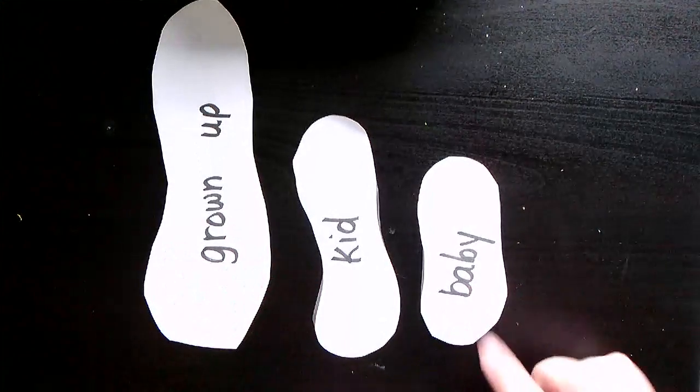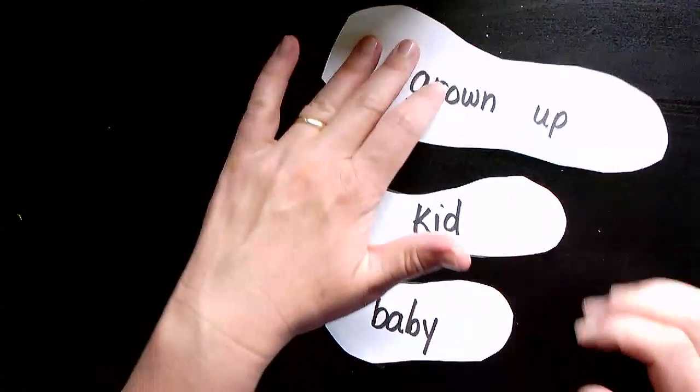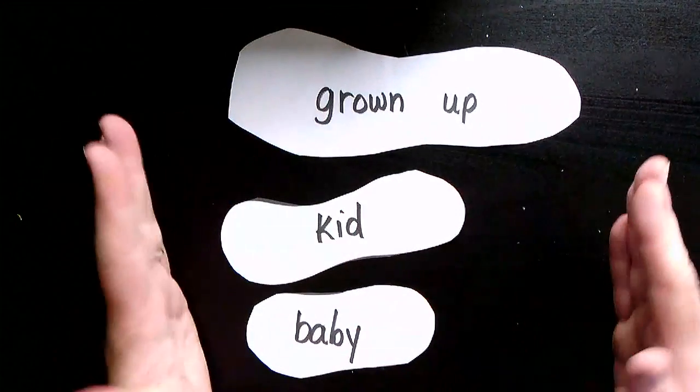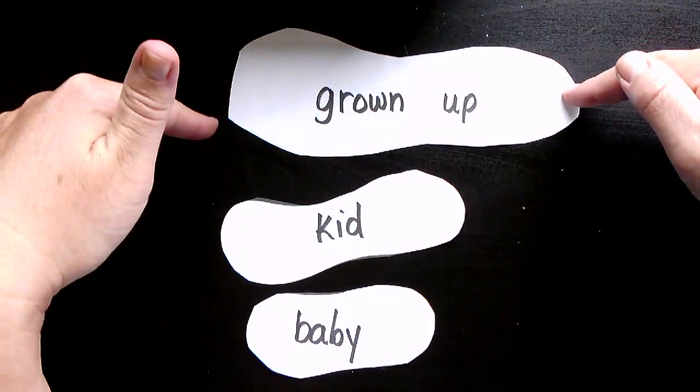You'll notice that the baby shoe is short, and the kid's shoe is a little bit longer, and the grown-up shoe is the longest. So it would have the biggest length because it's the longest.